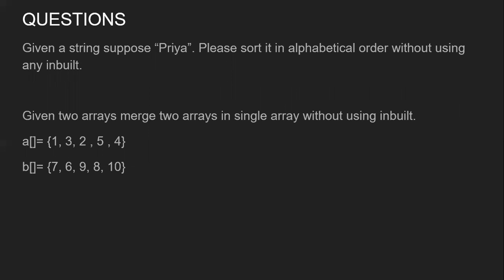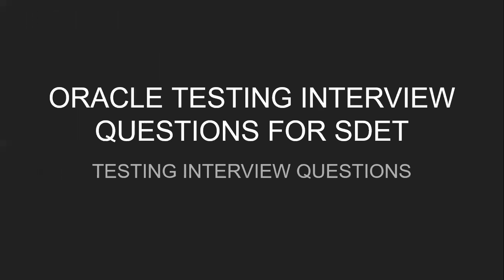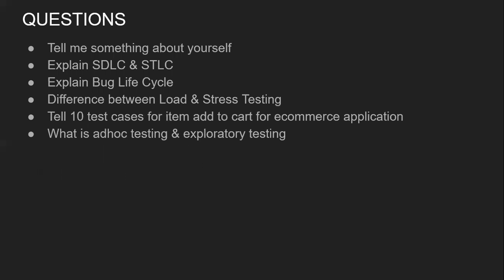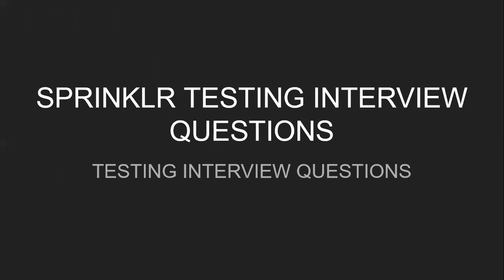At the end, testing interviews at these companies also include Java programming questions. For example: given a string like 'Priya', sort it in alphabetical order without using any built-in function. Also: given two arrays, merge them into a single array without using built-in functions. These were the Java programming questions asked at Sprinkler.